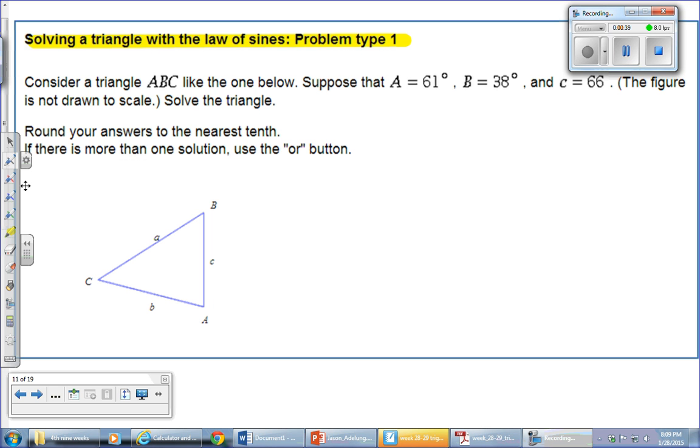So what do they give you? If I'm looking here, I've got an angle and an angle, right? So capital A is referring to this angle right here, 61 degrees.